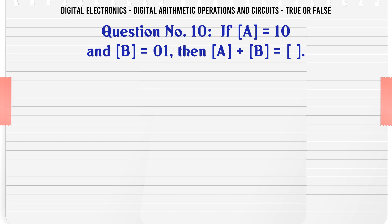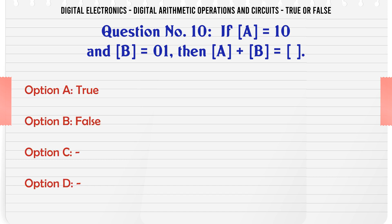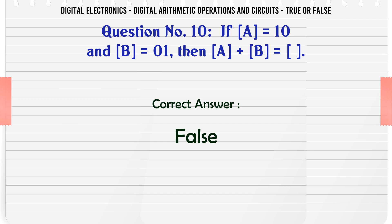If A = 10 and B = 01, then A plus B equals... True or False? The correct answer is False.